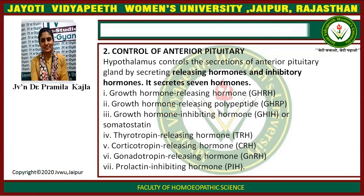The second function is control of the anterior pituitary. The hypothalamus controls the secretion of the anterior pituitary by secreting releasing hormones and inhibitory hormones. It secretes seven hormones: growth hormone-releasing hormone, growth hormone-releasing polypeptide, growth hormone-inhibiting hormone or somatostatin, thyrotropin-releasing hormone, corticotropin-releasing hormone, gonadotropin-releasing hormone, and prolactin-inhibiting hormone.